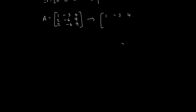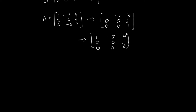We end up with the first row being 1, minus 3, 4, and the third entry 0, 0, 1. By subtracting the second and third rows, we end up with the finally reduced matrix. You can show that yourself — it's quite simple. Now, what we've got are these two row vectors: 1, minus 3, 4 and 0, 0, 1.